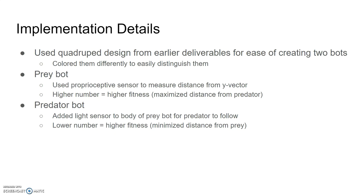For the prey bot, I used the proprioceptive sensor to measure distance from the y-vector — the higher the number, the higher the fitness, since it maximizes distance from the predator. For the predator bot, I used the light sensor to follow the prey, and the lower number equals higher fitness since it minimizes distance.